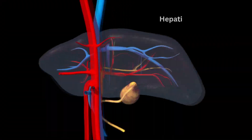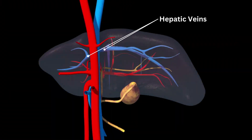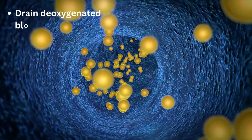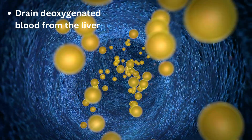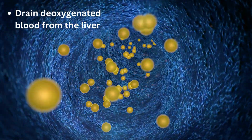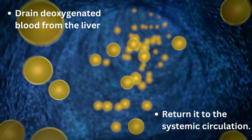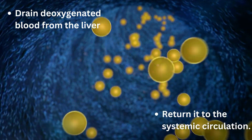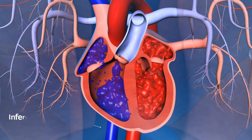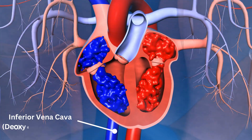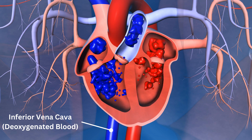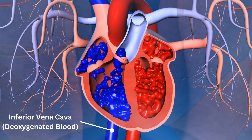The hepatic veins drain deoxygenated blood from the liver and return it to the systemic circulation. They merge into the inferior vena cava, which carries the blood back to the heart.